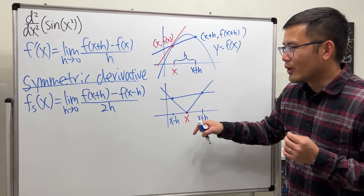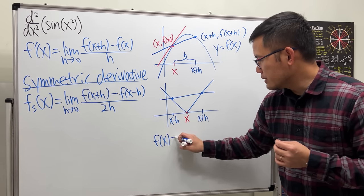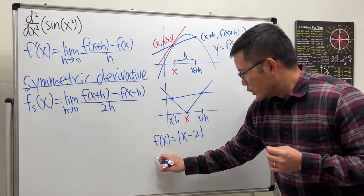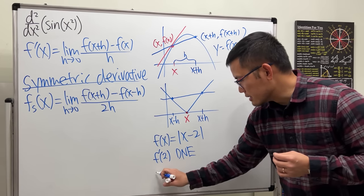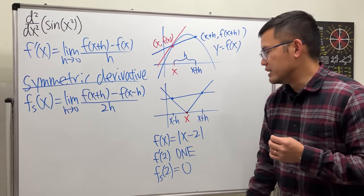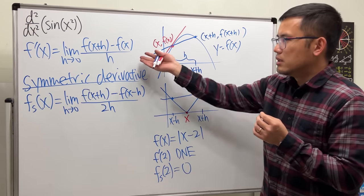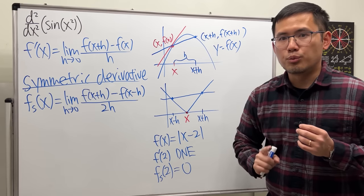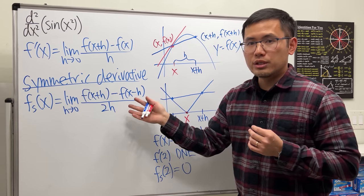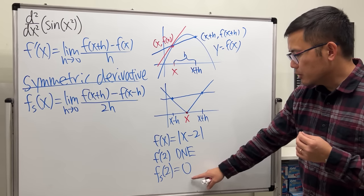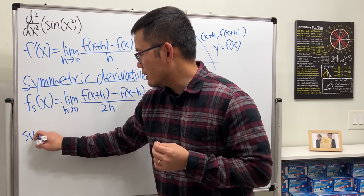If we make h approach zero, it's always going to be zero in this case. For example, if f of x equals absolute value of x minus 2, the regular derivative does not exist when x is 2, but the symmetric derivative will be equal to zero — you can think of this as the absolute value function shifted right two units. The key point: if we have the regular derivative then we will also have the symmetric derivative, but not the other way around. Sometimes we can have the symmetric derivative but not the regular derivative.